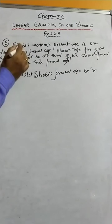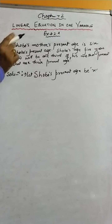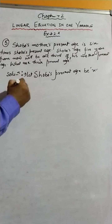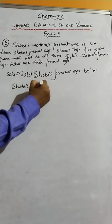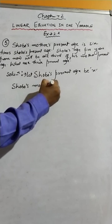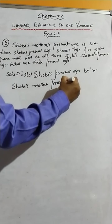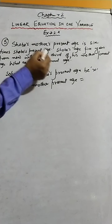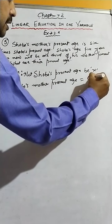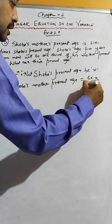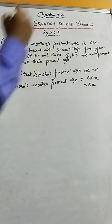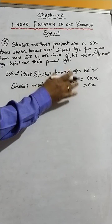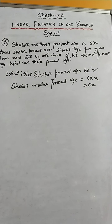Now that we have Shobu's present age as X, we can estimate Shobu's mother's present age. That would be six times Shobu's present age, which is six X. So these are the present ages of Shobu and Shobu's mother.